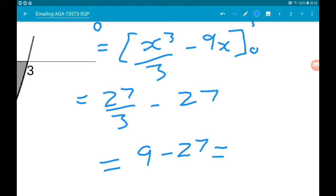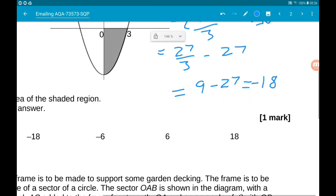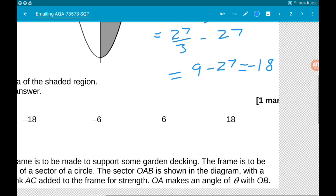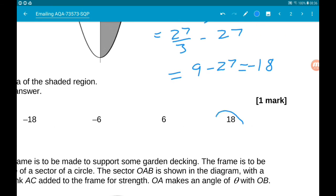That gives us negative 18. But the reason this is negative is because the area is beneath the x-axis. You cannot have a negative area, so the answer is positive 18. Cool.